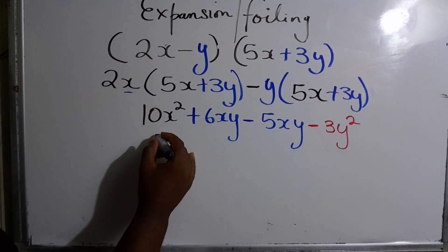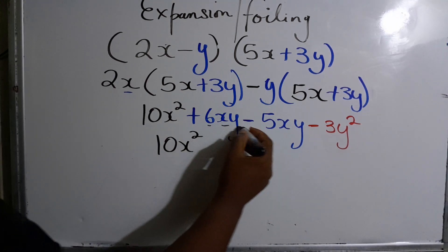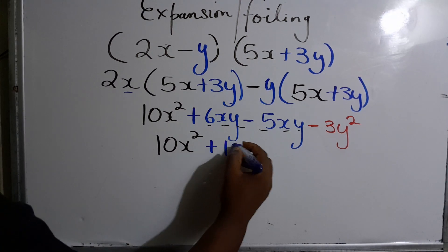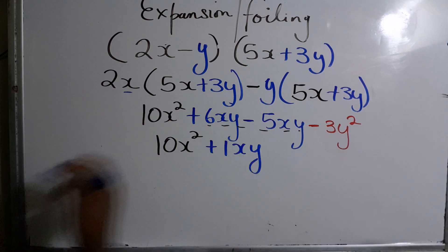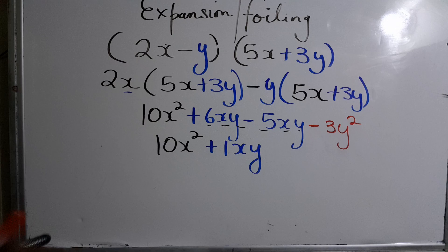So we'll put back our 10x squared because this is the only like term. Then 6xy minus 5xy would give us positive 1xy, or just xy. And of course, we write out the negative 3y squared.